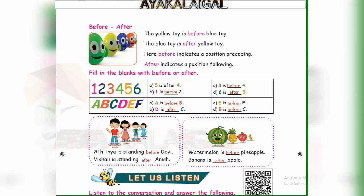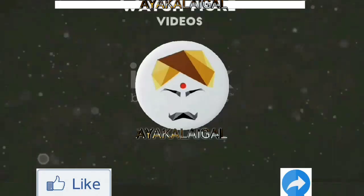Vishali is standing dashed Anish — Vishali is standing after Anish. Watermelon is dashed — the banana is before the apple. Thank you, children.